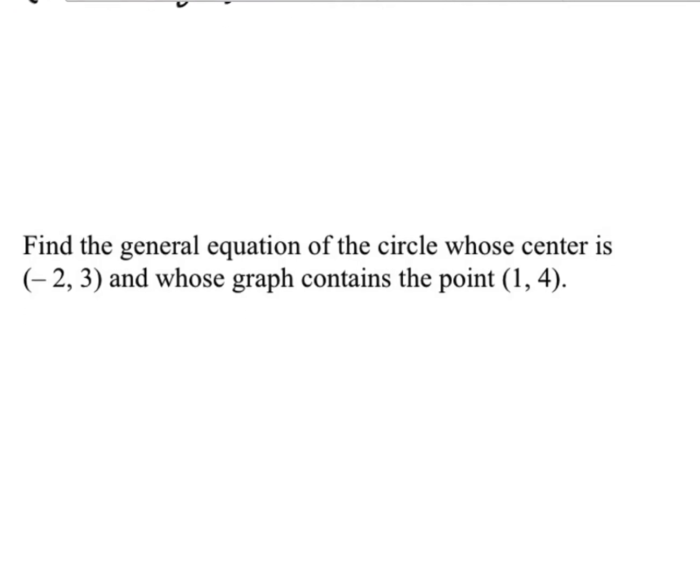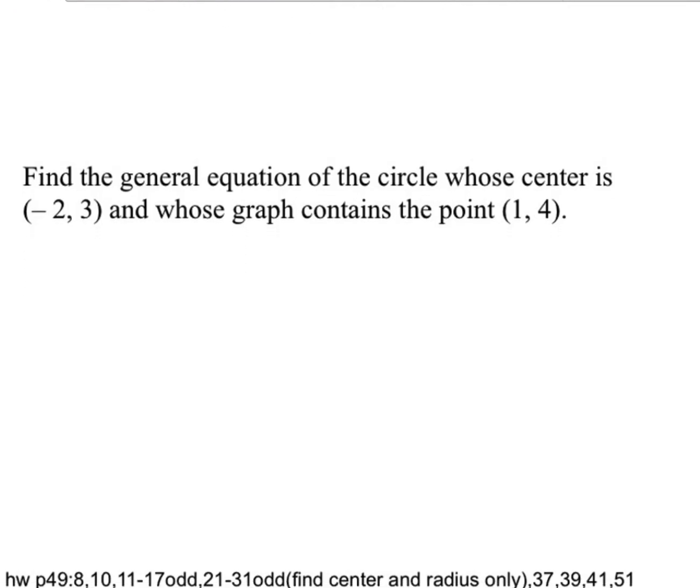Okay, last problem. Find the general equation of the circle whose center is (-2,3) and whose graph contains the point (1,4). So how do I find that one? So there's more than one way to do it. So the center, so that's h and that's k. So you can start by writing this, x minus h, so (x+2)², plus y minus k, equals, and then this should be the radius squared.